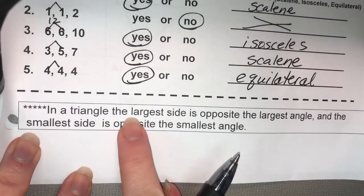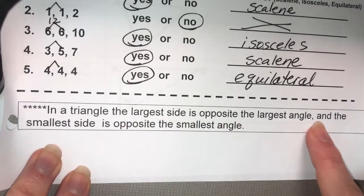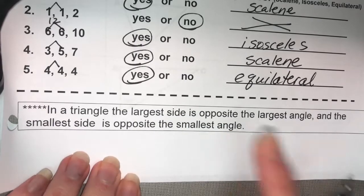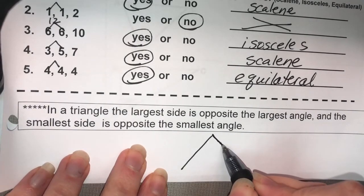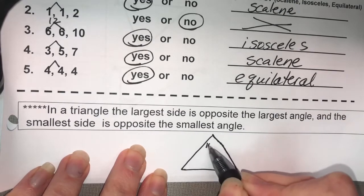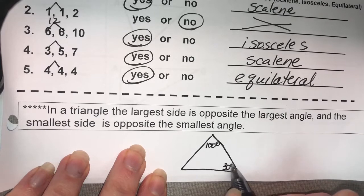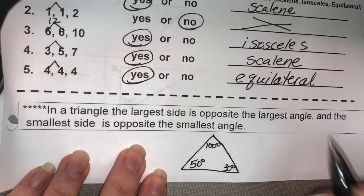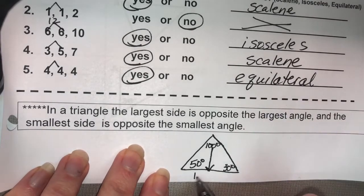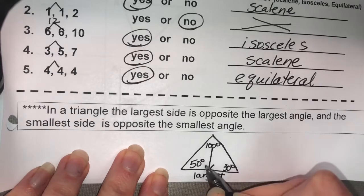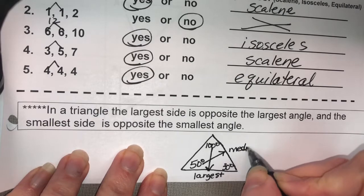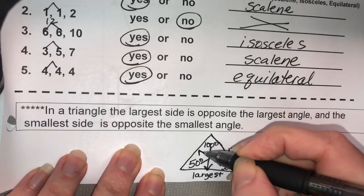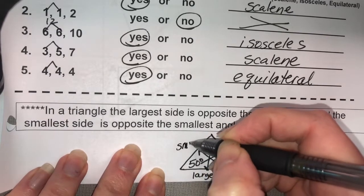Hopefully you did really good on that. Now, we have in the box a very important piece of information. In a triangle, the largest side is opposite the largest angle, and the smallest side is opposite the smallest angle. So let's say I have an obtuse triangle here. Let's say I have a 100 degree angle, a 30 degree angle, and a 50 degree angle. The biggest angle will be across from the largest side. The middle angle will be across from the medium side, and the tiniest angle will be across from the smallest side.